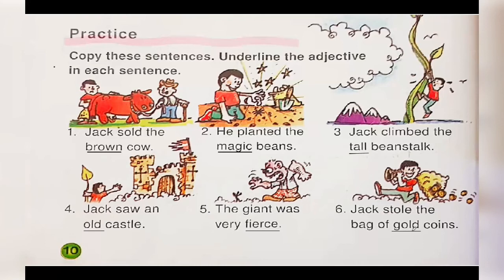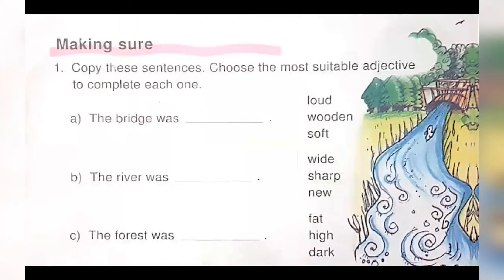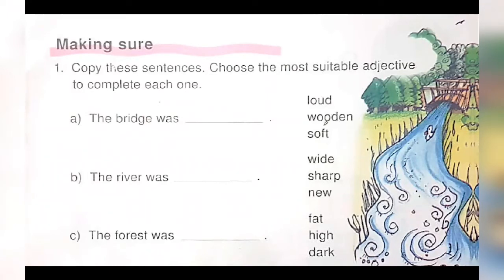I hope you all are understanding. Now on page number eleven, exercise number one: copy these sentences and choose the most suitable adjective to complete each one. We have to choose the correct, most suitable adjective for the blank. A: 'The bridge was blank.' Can a bridge be loud, wooden, or soft? The bridge can be wooden. So, the bridge was wooden.